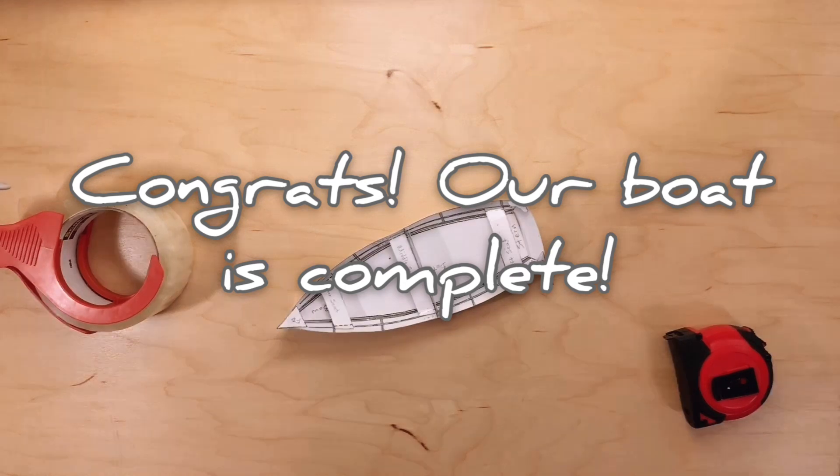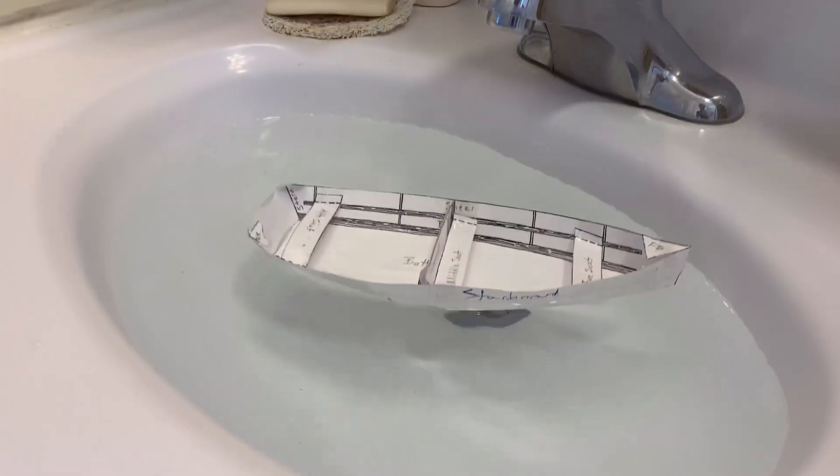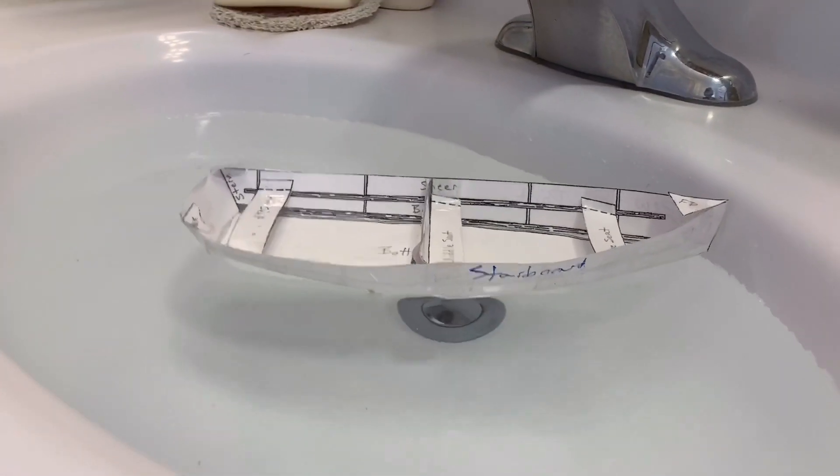Congrats! Your boat looks great. For one additional fun step, you can take the tape that you had and tape around the sides of the boat. Try floating your boat in the tub or the sink. Happy sailing!